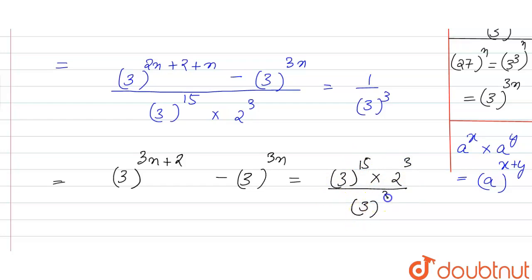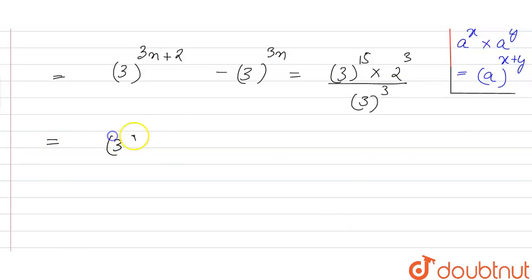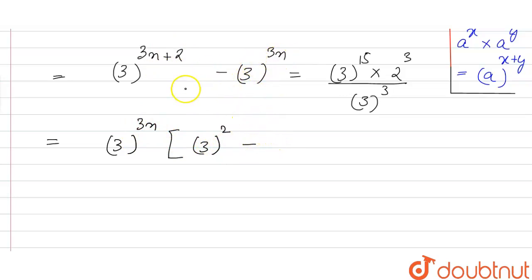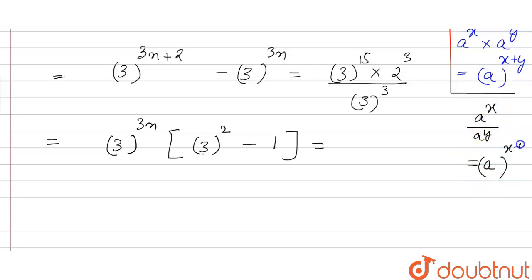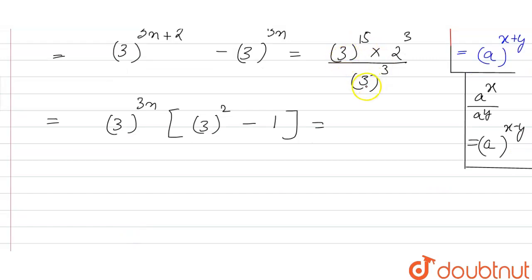Taking 3 raised to power 3n common from the numerator, we are left with 3 raised to power 2 minus 1. Using the property that in division, if the bases are the same the powers are subtracted, 3 raised to power 15 upon 3 raised to power 3 gives 3 raised to power 15 minus 3, which is 3 raised to power 12, into 2 raised to power 3.